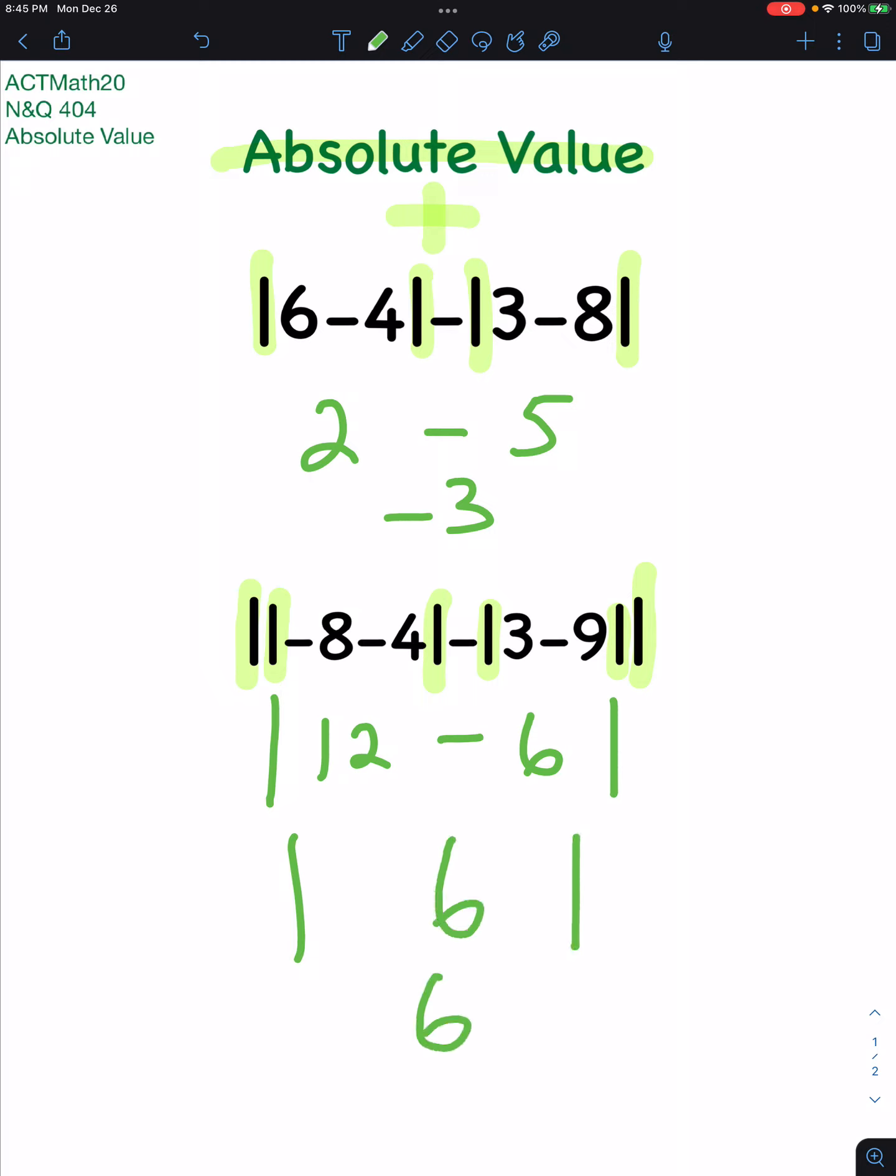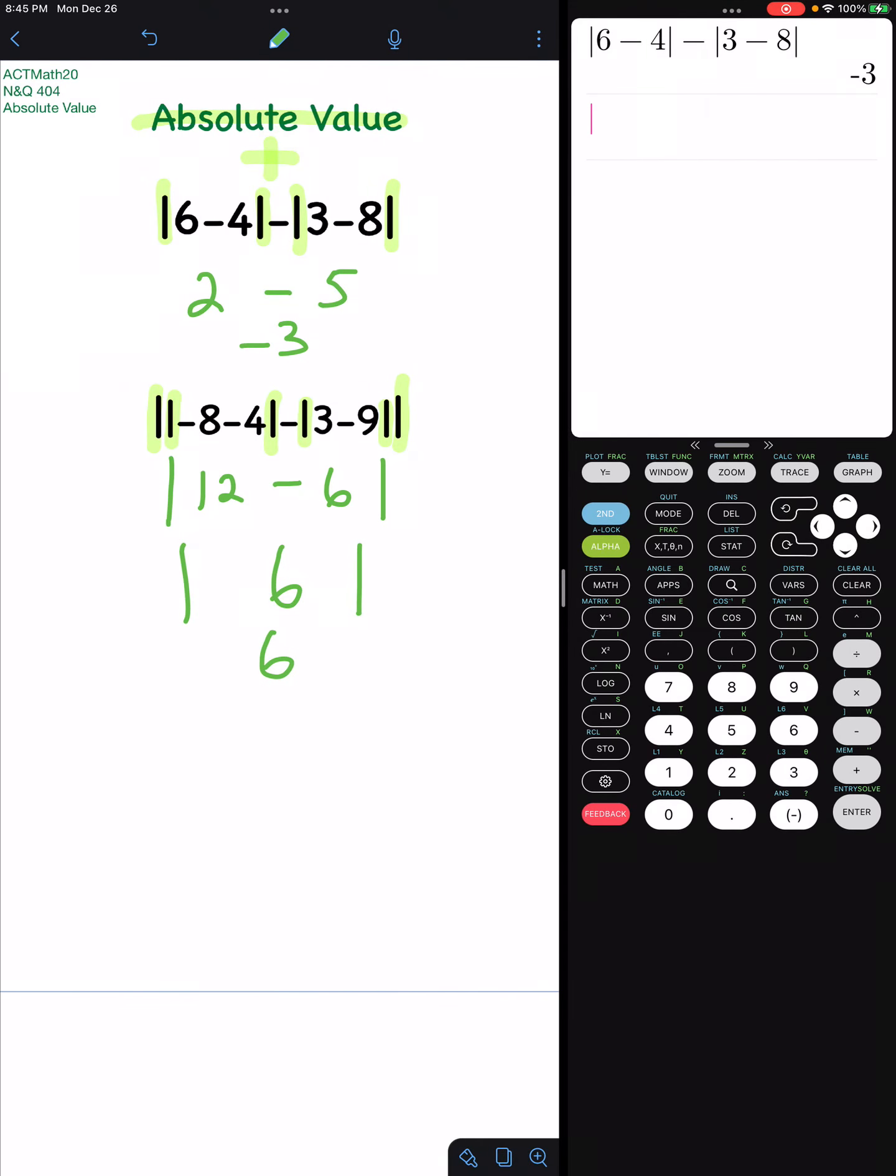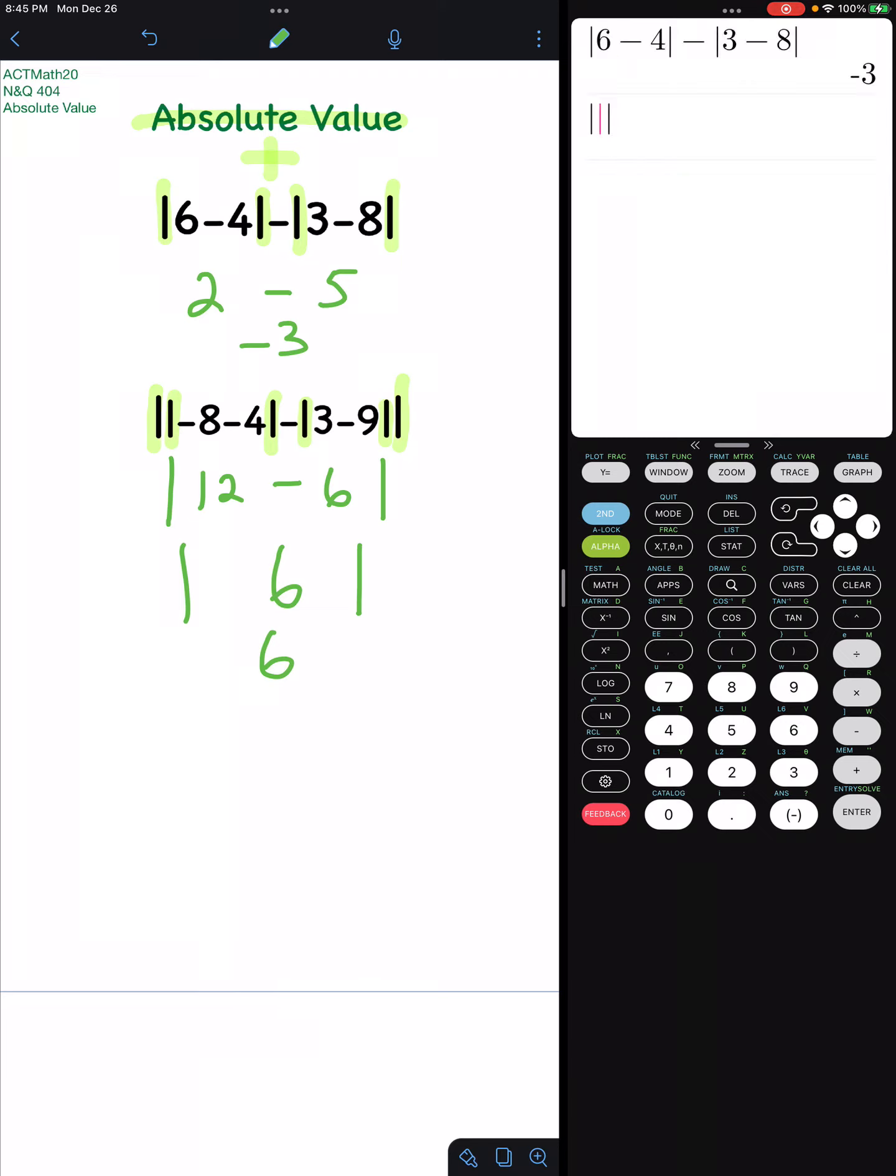If you don't believe me, use the calculator, especially if you're unsure on your ACT. Let's take a look. You can go to the math button and go over once to numbers, and there's your absolute value.